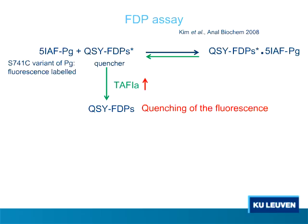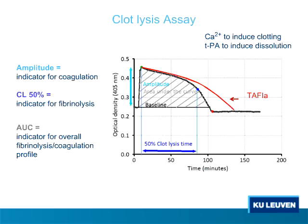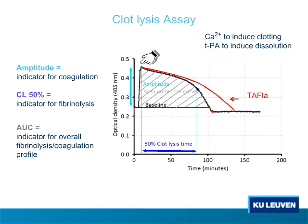There are also indirect methods to measure the effect of TAFI-A inhibition. The clot lysis assay takes plasma, recalcifies it to induce coagulation, and adds TPA to induce fibrinolysis, producing a typical clot lysis profile plotting time in minutes against optical density. Parameters used to characterize inhibitors include the amplitude, the 50% clot lysis time — the difference between maximal and half-maximum turbidity — or the area under the curve. The more TAFI-A present in your sample, the longer the clot lysis time.